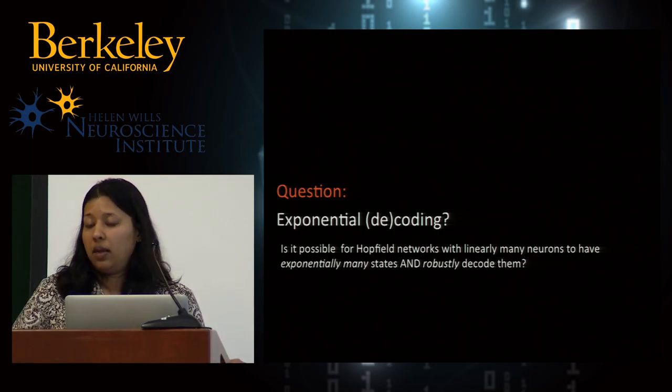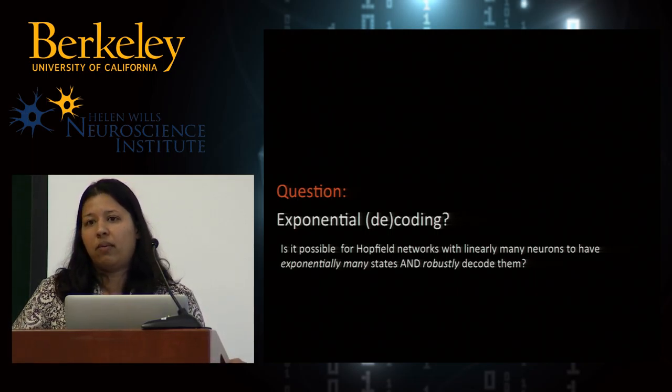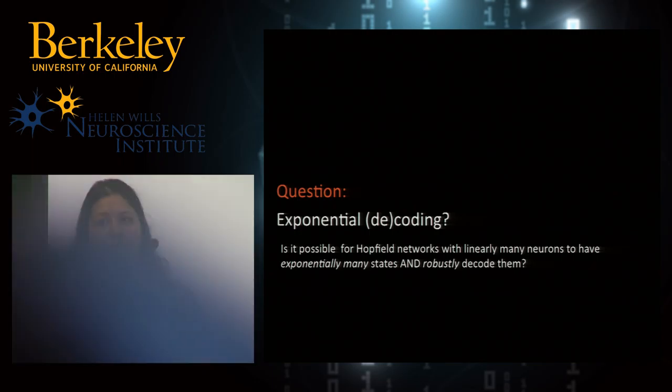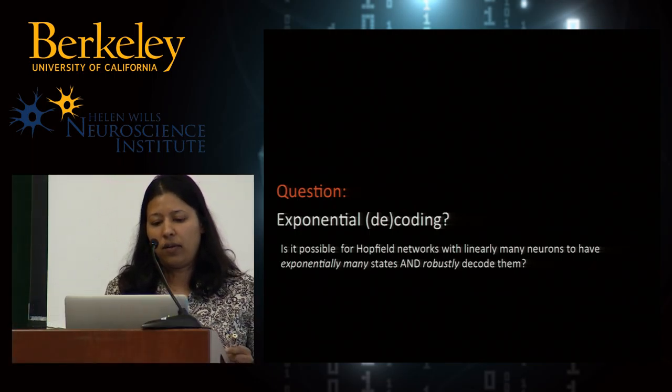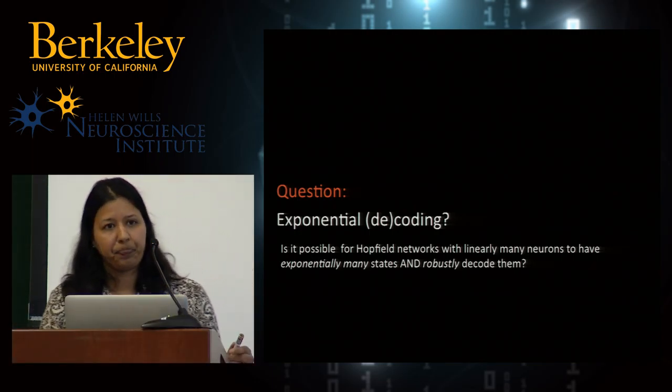In general, either Hopfield networks have low information rate or are not robust. The question is: is it possible to have exponentially many fixed points — exponential decoding of exponentially many states — in Hopfield networks that are also robust to finite fractions of errors in the system?